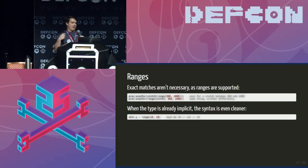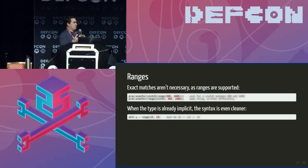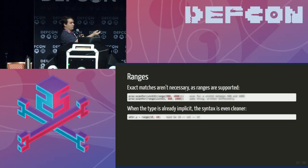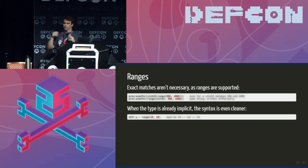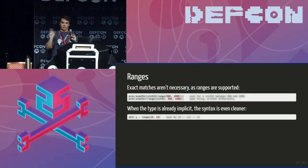On top of basic scanning, I've added ranges — if you don't know exactly what a value is but know it must be between 500 and 1,000, you can just specify that range. You can do this by putting a range function inside the type function, or by specifying the range type with the two values. If you're using a strongly typed structure, you just say 'equals range' and it figures out the types automatically.